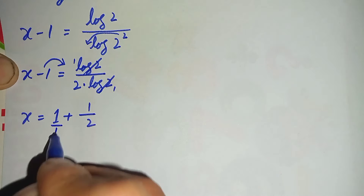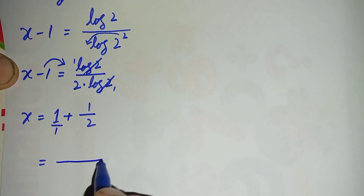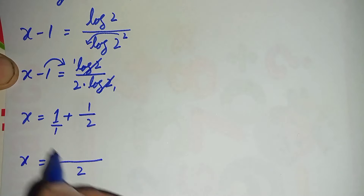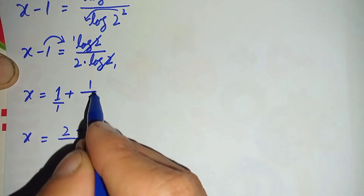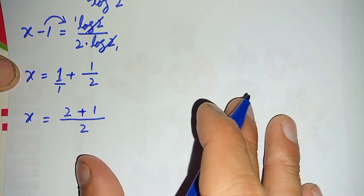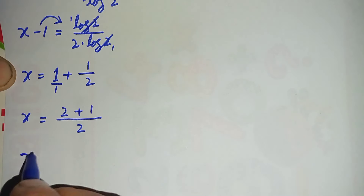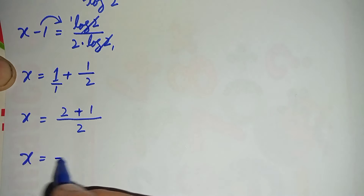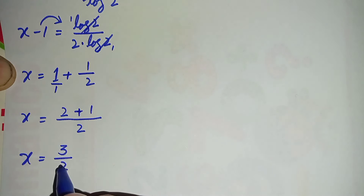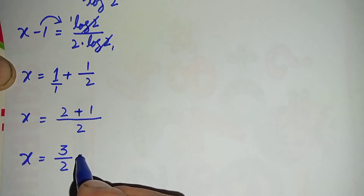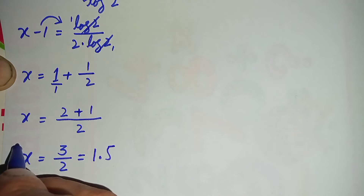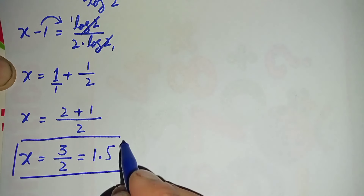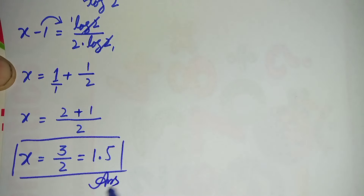Next we shift negative 1 to the right-hand side, so it becomes plus 1. Taking the LCM of 1/2 and 1, the LCM is 2. This gives x is equal to 1 plus 2 over 2, which is 3 over 2. So x equals 3/2, or 1.5, which is our answer using the first method.